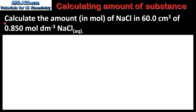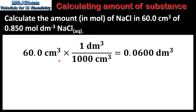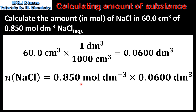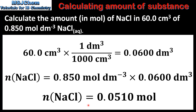In our final example we will calculate the amount in moles of sodium chloride in 60 centimeters cubed of a 0.850 mole per decimeter cubed aqueous solution. The first step is to convert the volume in centimeters cubed to decimeters cubed. We then multiply the concentration in moles per decimeter cubed by the volume in decimeters cubed, which gives us an amount of sodium chloride of 0.0510 moles.